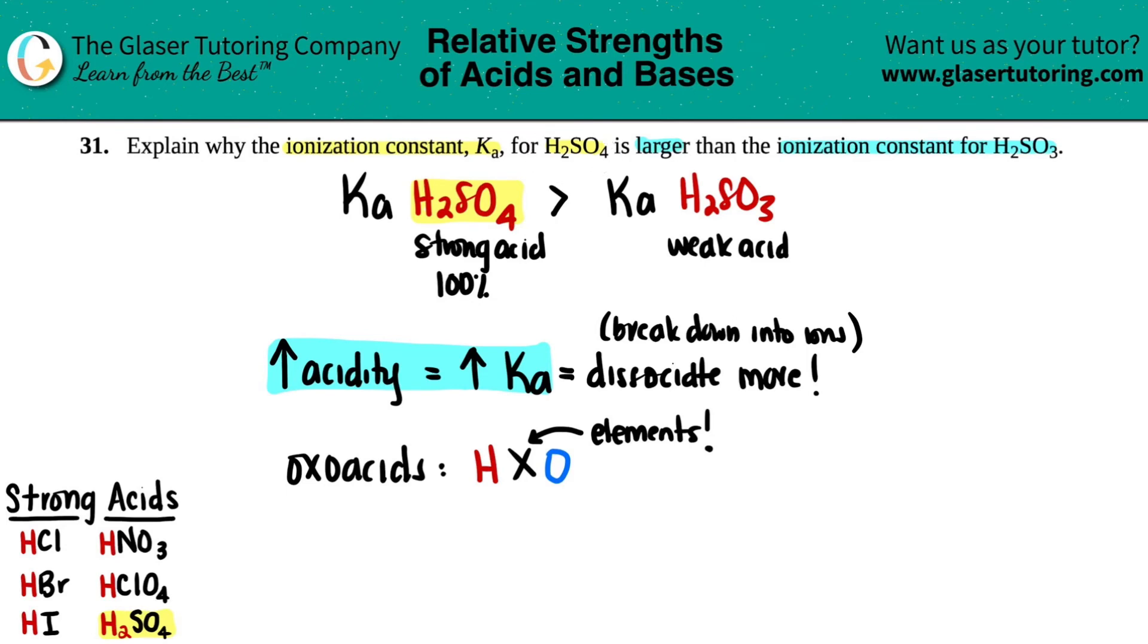H2SO4 is an oxoacid. It has the Hs in the front. You have some random element in the middle, and then you have O4. The same thing with H2SO3. You got those hydrogens in the front. You got that random element in the middle. In this case, it's sulfur. And then you have O3.